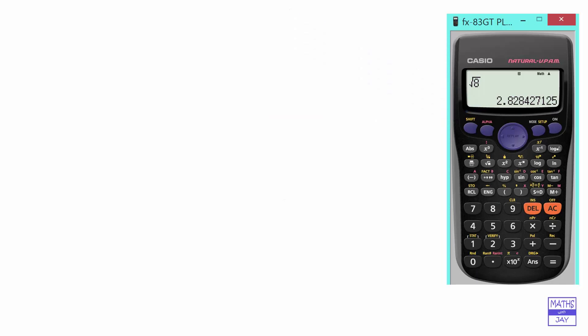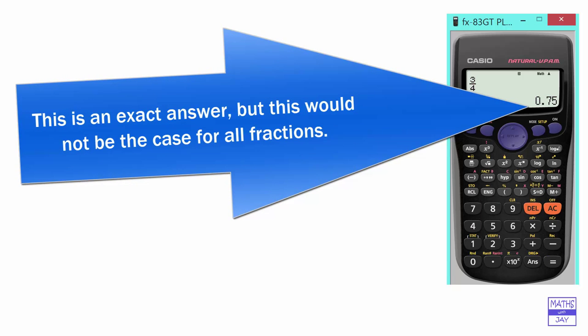The same sort of thing will happen to fractions. So if, for example, we key in 3 quarters and just do equals, that would stay as 3 quarters. But if we press the SD key, then it will give us the fraction as a decimal. So a very useful thing to do to have your calculator in math mode.